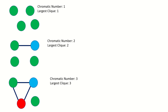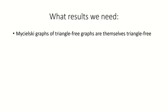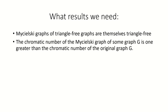Let's see why this construction lets us prove this result. We'll need two smaller results: one, that the Mycielskian only creates new triangles if the original graph had triangles of its own; and two, that the chromatic number of a Mycielsky graph is one greater than that of its original graph. These two results allow us to start with a triangle-free graph of some chromatic number k, apply the Mycielskian over and over, increasing the chromatic number by one each time, while creating no triangles.